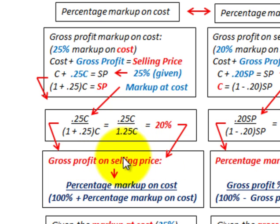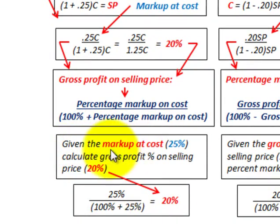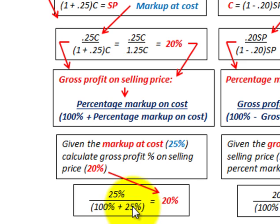So our gross profit on our selling price is 20%, based on a markup on cost of 25%. The general equation here is: gross profit on selling price equals the percentage markup on cost divided by 100% plus the percentage markup on cost. In our example, 25% divided by 125% equals 20%.